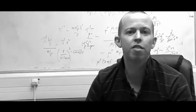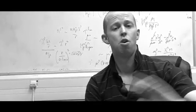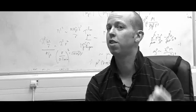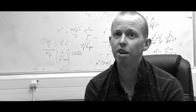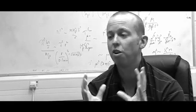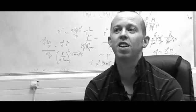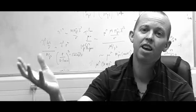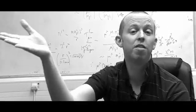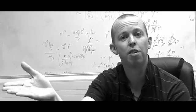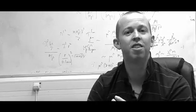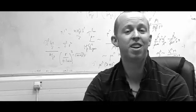If you took everything out of the universe — all the planets, all the stars, all the dark matter — there's still something left over, and that's the vacuum energy. One of the great mysteries of physics is that the vacuum energy density we observe is only very, very small. Theoretically, we expect the density to be very high, and we really don't understand why it's like that.